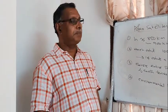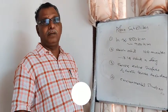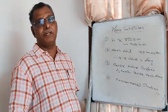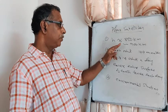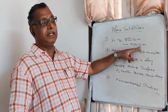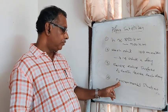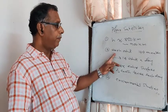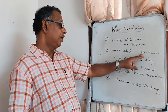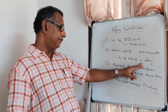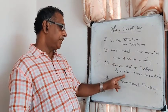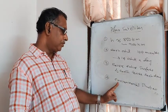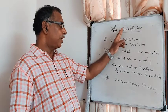Polar satellites revolve across the poles of the earth, very close to the surface, at a height of about 900 km. Each orbit takes about 100 minutes, and they make 14 orbits a day. They cover the entire surface of the earth twice a day and are used for environment and surface property studies.